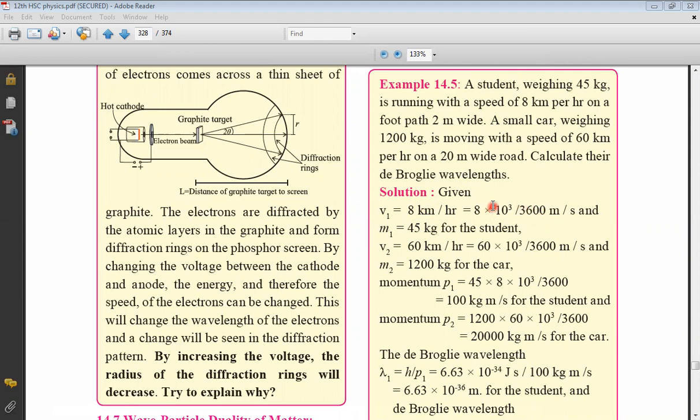Now please see, you can multiply 1000 by 3600 or once you reduce it, it is 5 by 18. So kilometer per hour to meter per second, multiply by 5 upon 18. And the mass of the student is 45 kg.